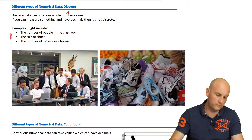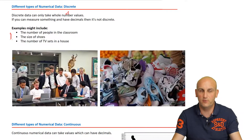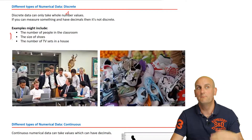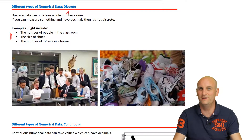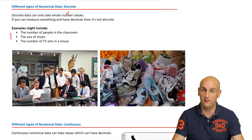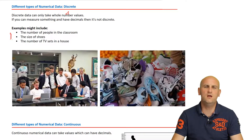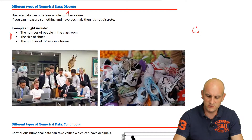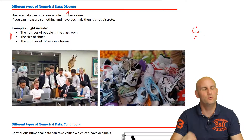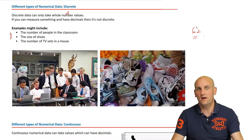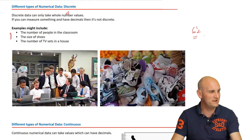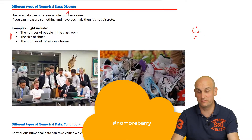Examples might include the number of people in a classroom. You're not going to have 3.7 people in a classroom. The size of shoes — do they take whole number values? Well, you might say no, because I have a size 6.5 shoe. There are always exceptions to the rule. The way I think of discrete data is ask yourself: can I have some really random decimal value? Can I walk into a shoe shop and say 'can I have a 6.473 shoe size, please?' They're going to say no.